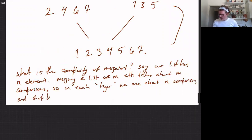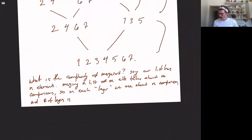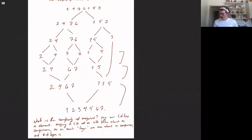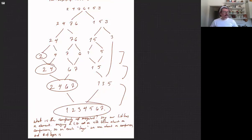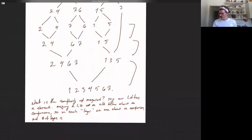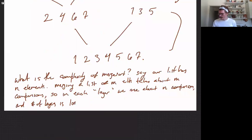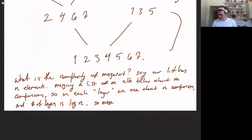The number of layers is the number of times we have to split in half to get down to a single element, which is another way of saying the number of times you need to divide n by 2 to get down to 1 — which is log n (log base 2, though we'll leave the base off). So in each layer we use n comparisons, and the number of layers is log n. Therefore merge sort is O(n log n).